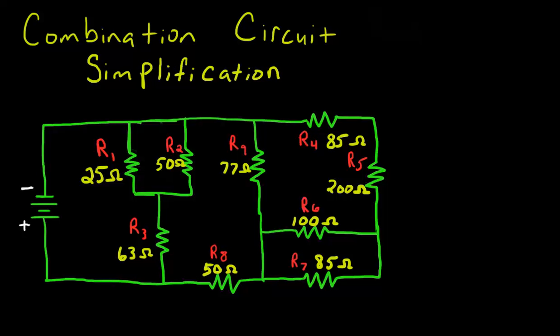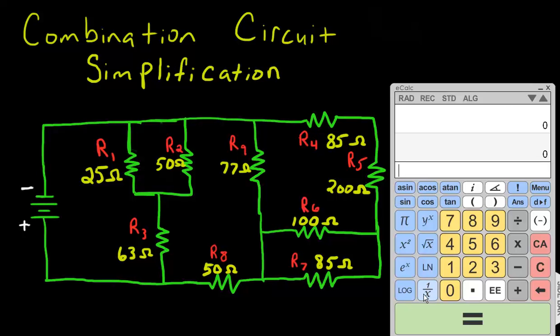So let's go ahead and do the reciprocal method. We can also do product over sum, but with a scientific calculator that has the reciprocal button, I think it's just very simple to go ahead and punch it in. We have a 100-ohm resistor, and we'll reciprocate it and add it to the 85-ohm resistor in the reciprocal. We get a total value that we have to take the reciprocal of, and we get 45.95 ohms of resistance for our R6 and R7 resistor.